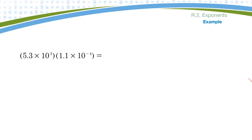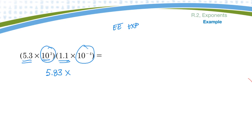Here's an example where we're multiplying two numbers that are in scientific notation. You can probably just do this on your calculator if you know how to use the EE button or the EXP button. What I can do is multiply just the number part: 5.3 times 1.1 gives me 5.83. Then I multiply the ten part — those are common bases, so I add the exponents because I'm multiplying. So it would be ten to the three plus a negative four, or 5.83 times ten to the negative one.